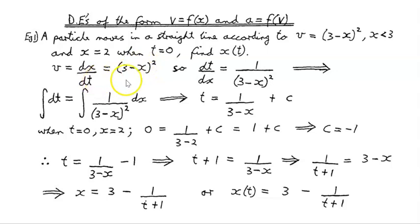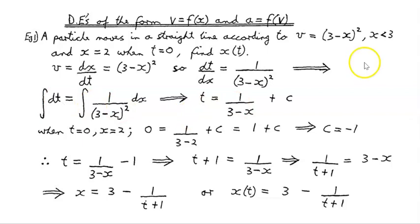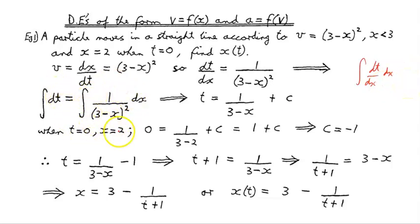What we can do is take the reciprocal of both sides: dt/dx equals 1 on (3 minus x) all squared. Then we're going to integrate that with respect to x. What we really have is dt/dx integrated with respect to x, because on the right-hand side we can integrate with respect to x since there are only x's there.